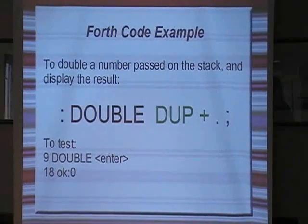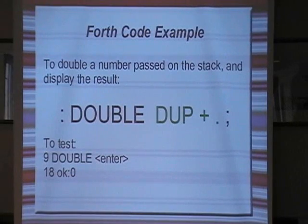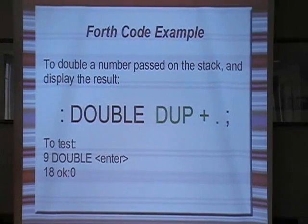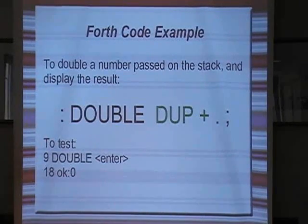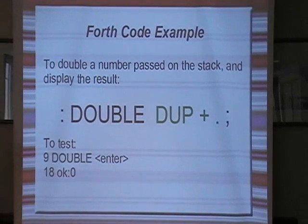Here's a very simple example that everybody starts off with in 4th. If you've done any 4th programming I'm sure you've seen this example. This is a word which simply doubles what's input to it and displays the answer. There is no syntax in 4th — none, nothing at all. In C or Basic we have things like parentheses to pass parameters, commas to separate them, and we must put a semicolon at the end of a line of code.